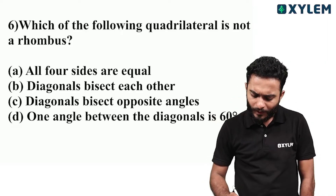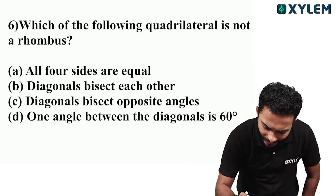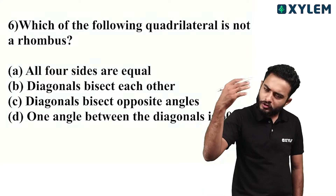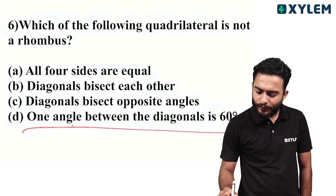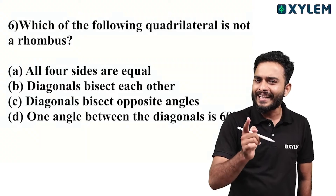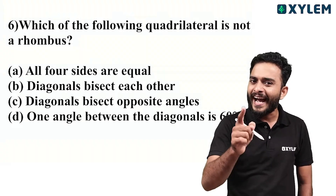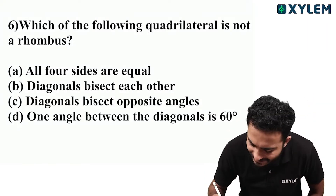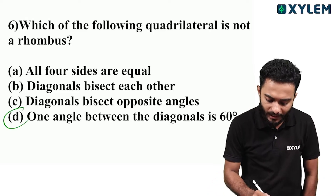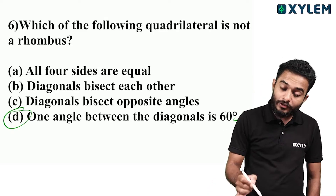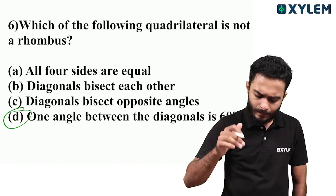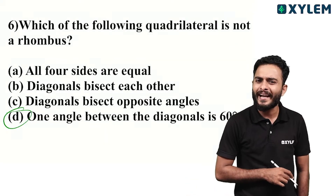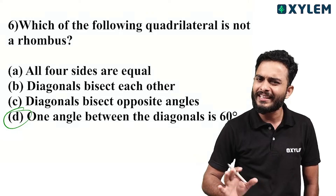All four sides are equal. Diagonals of a rhombus bisect each other. Diagonals bisect opposite angles. One angle between the diagonals is 60 degrees — but it should be 90 degrees. So option D is the answer. Which of the following quadrilaterals is a non-rhombus? Option D — one angle between the diagonals is 60 degrees, not 90 degrees. If it's 60 degrees, it's not a rhombus.